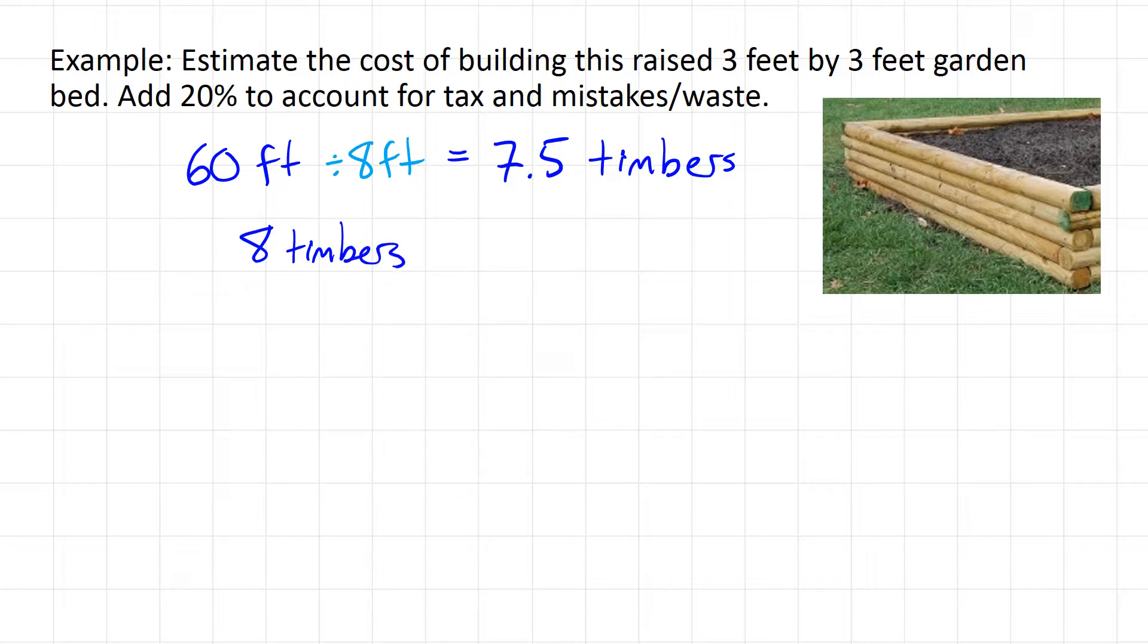So now we can go ahead and calculate our cost. The cost is $6.67 per timber.